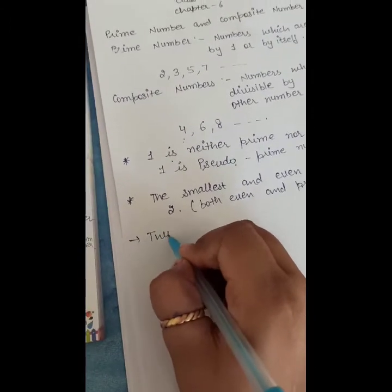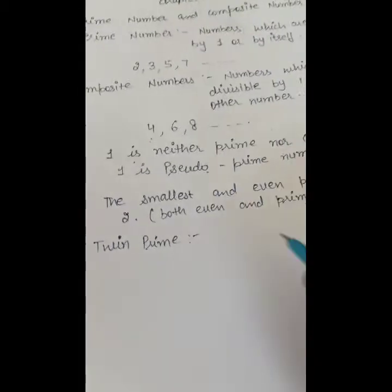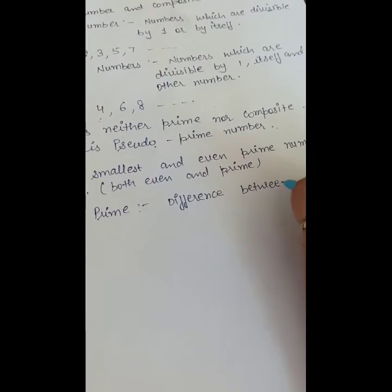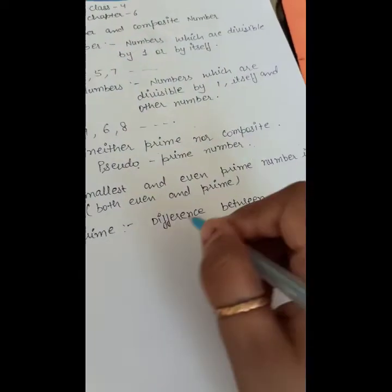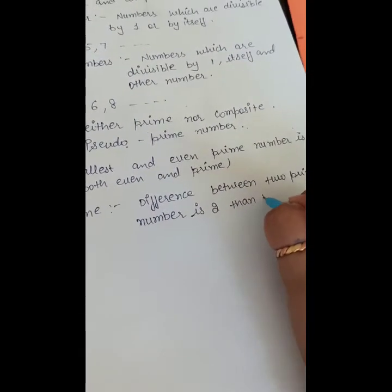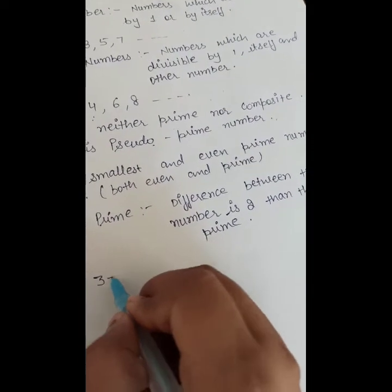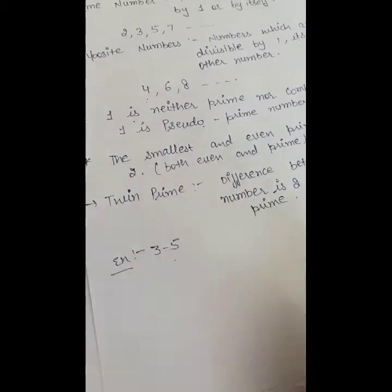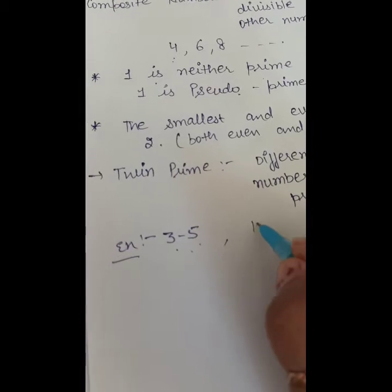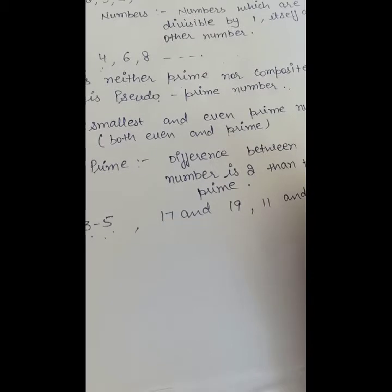Next point is twin primes. If 2 prime numbers whose difference is 2, then they are twin primes. Like 3 and 5 — they both are prime numbers and the difference between them is 2. Similarly 17 and 19, and 11 and 13 are examples of twin primes.